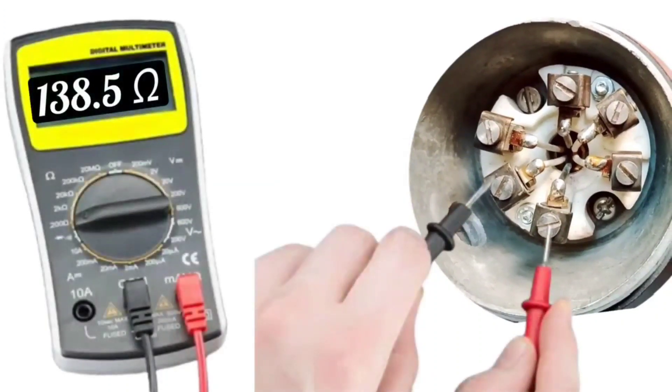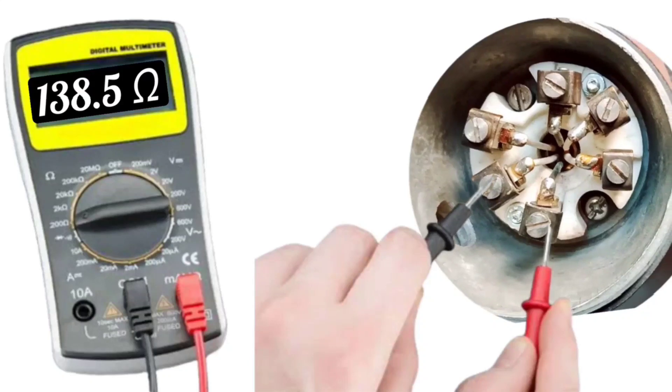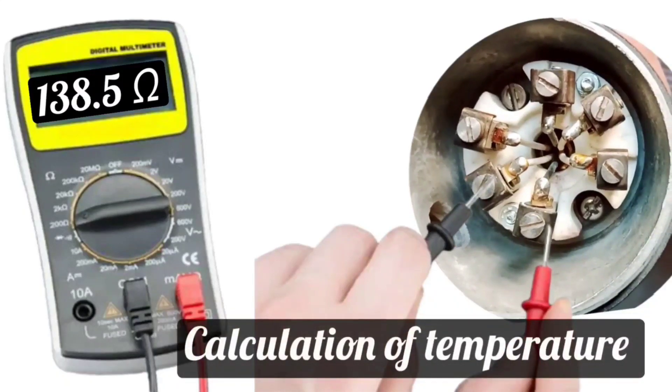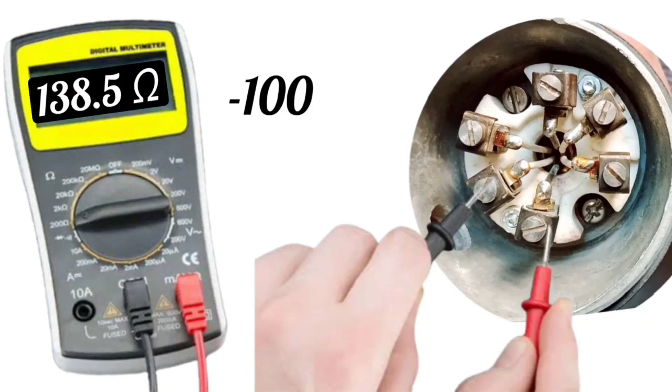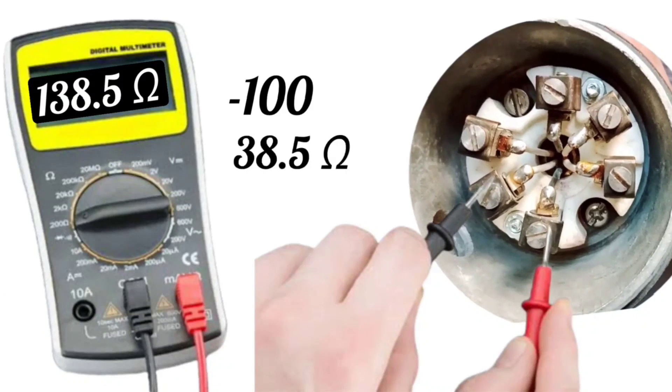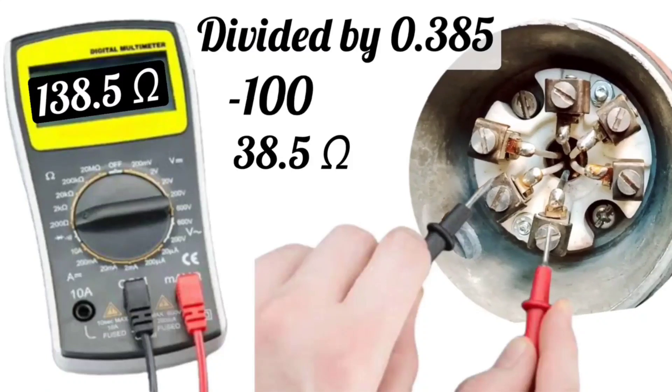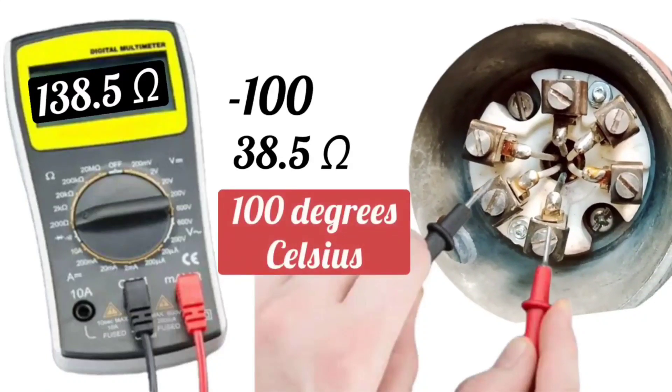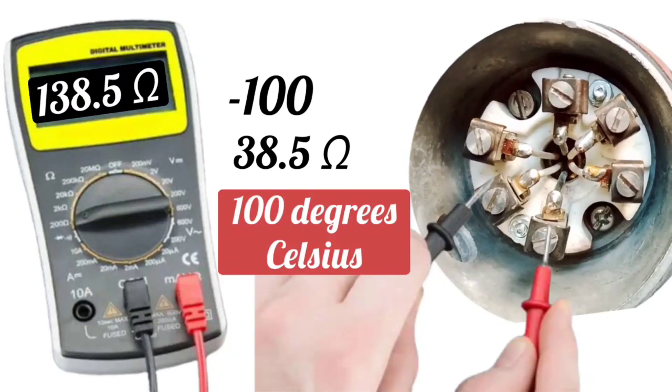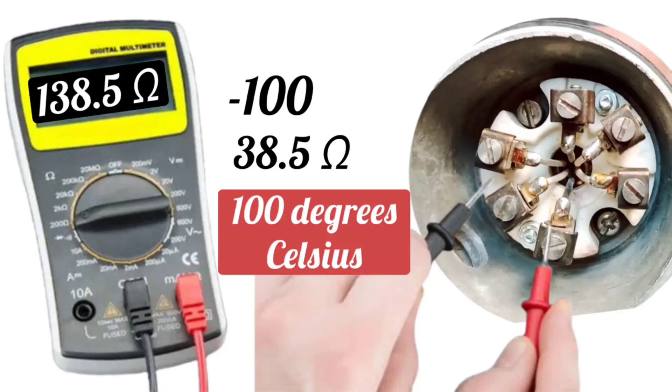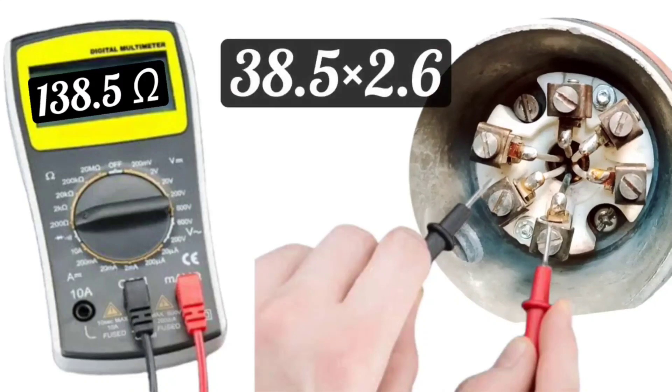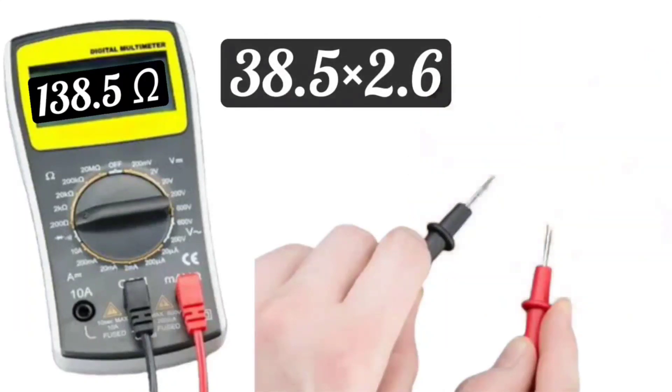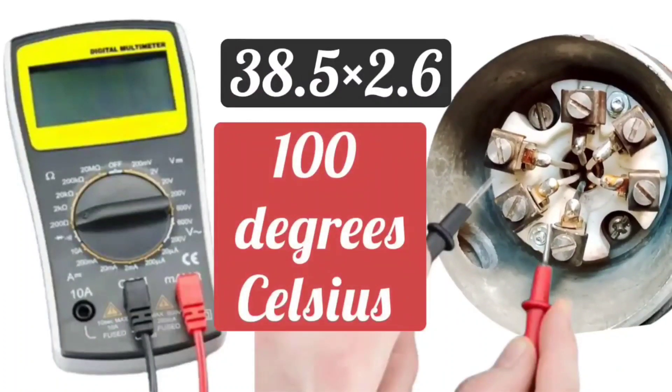For example, if the resistance of RTD is showing 138.5 ohms, then calculate the temperature. Subtract 100 from 138.5, it will be 38.5. When we divide it by 0.385, it will be 100, which means 100 degrees Celsius temperature will be on that place. If resistance is showing 138.5 ohms, let's solve it with other method. If you multiply 38.5 by 2.6, then it will also be approximately 100 degrees Celsius. So it's very easy to calculate RTD temperature.